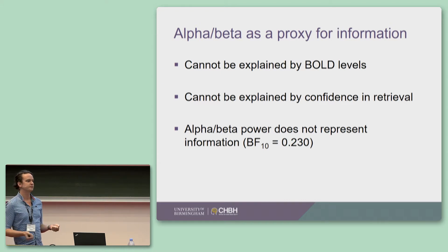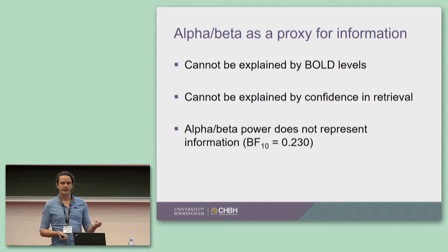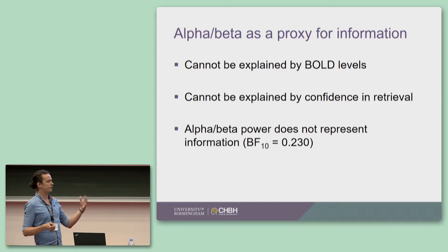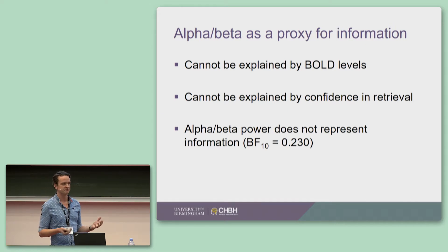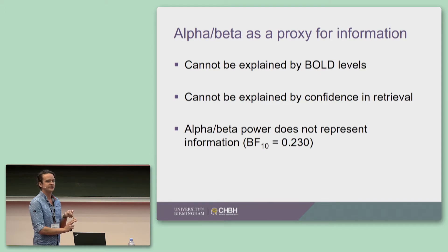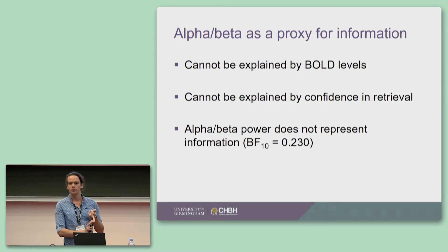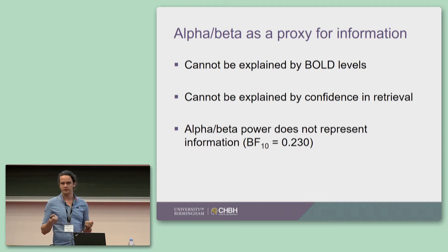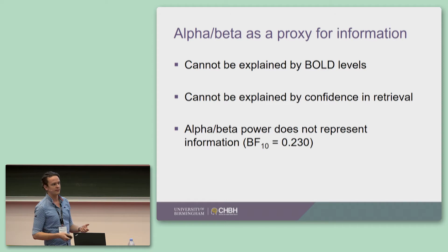And lastly, it could be that the fMRI Representational Similarity Analysis information measure and alpha-beta power are both just two sides of the same coin — both representing information independently and happening to correlate because both are representational patterns. So we also looked at whether you can decode the stimulus content from alpha-beta power using RSA, and we find that alpha-beta power cannot predict what you're perceiving or what you're remembering. This means the correlation isn't driven by alpha-beta power being a representational pattern itself; instead, it would indicate that it's a proxy — it allows these representational patterns to come forth.